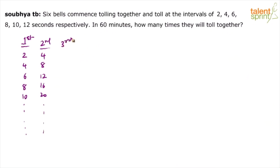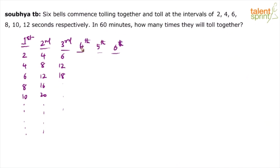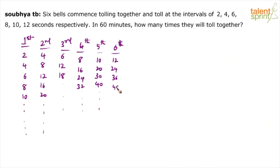The third bell rings at 6-second intervals: 6, 12, 18 and so on. You don't have to do all this in the exam — I'm just explaining the solution in detail; it's really one simple step. The 4th bell rings every 8 seconds: 8, 16, 24, 32 and so on. The 5th rings every 10 seconds: 10, 20, 30, 40 and so on. The 6th rings every 12 seconds: 12, 24, 36, 48 and so on.